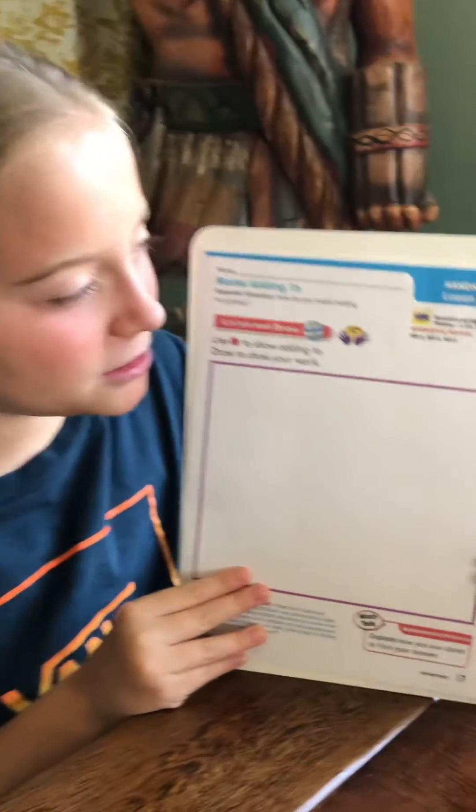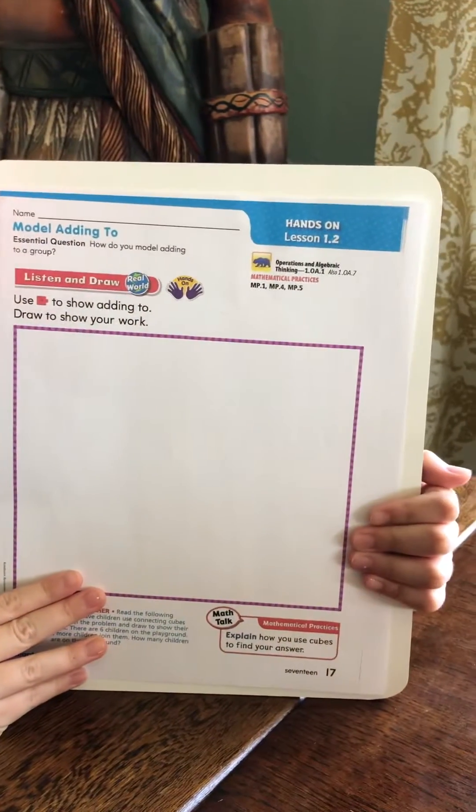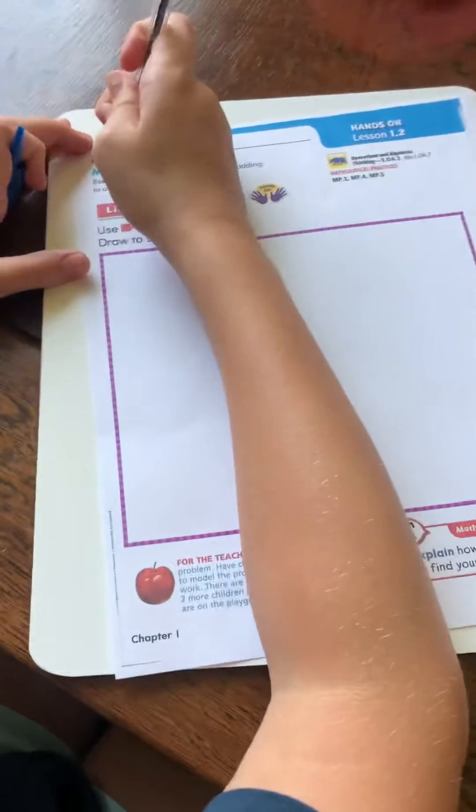Hi boys and girls, this is Gwen and today we're doing Go Math lesson 1.2. But first I know to always write my name at the top, so that's what I'm gonna do.